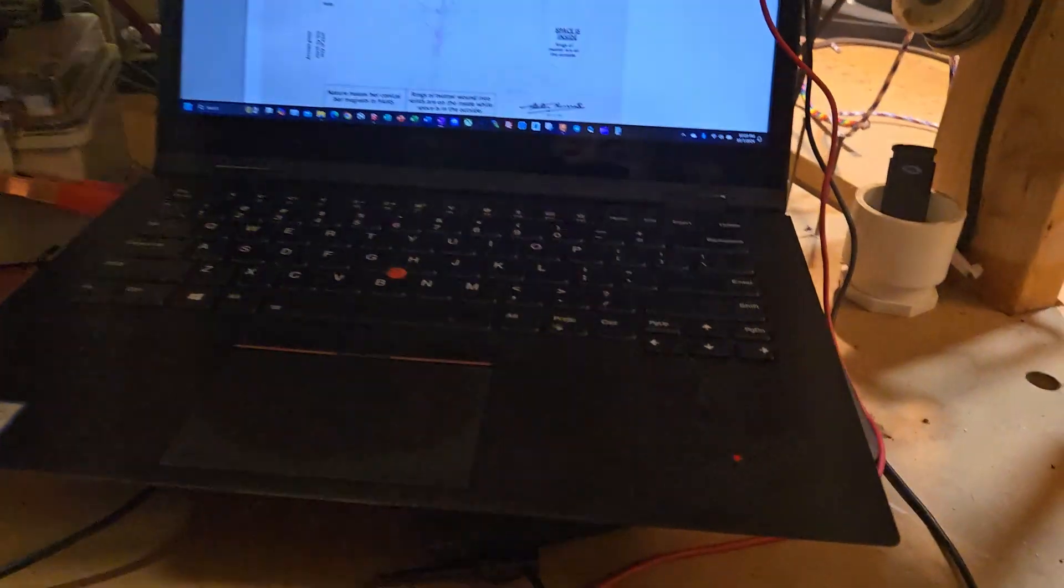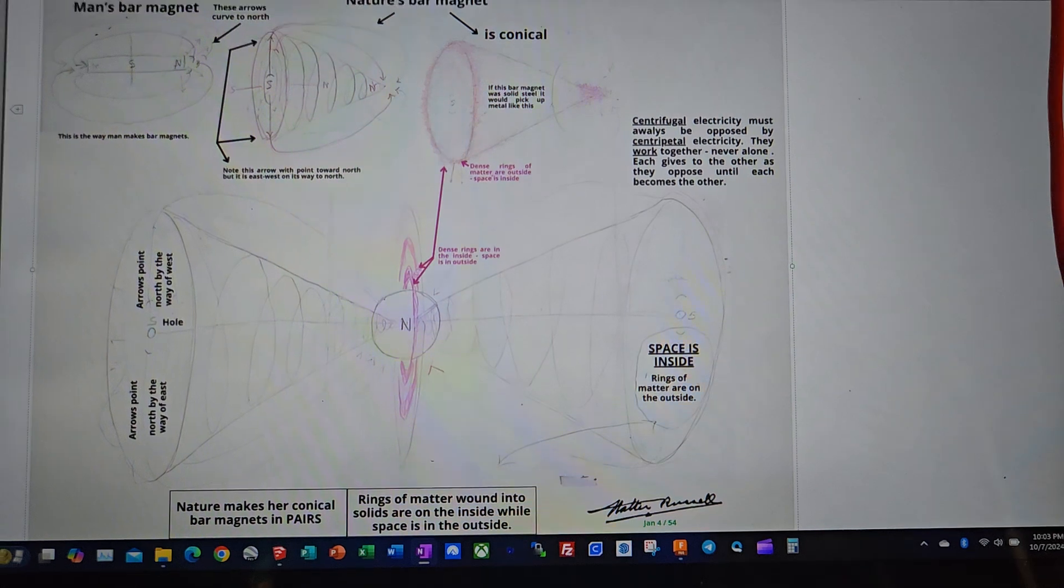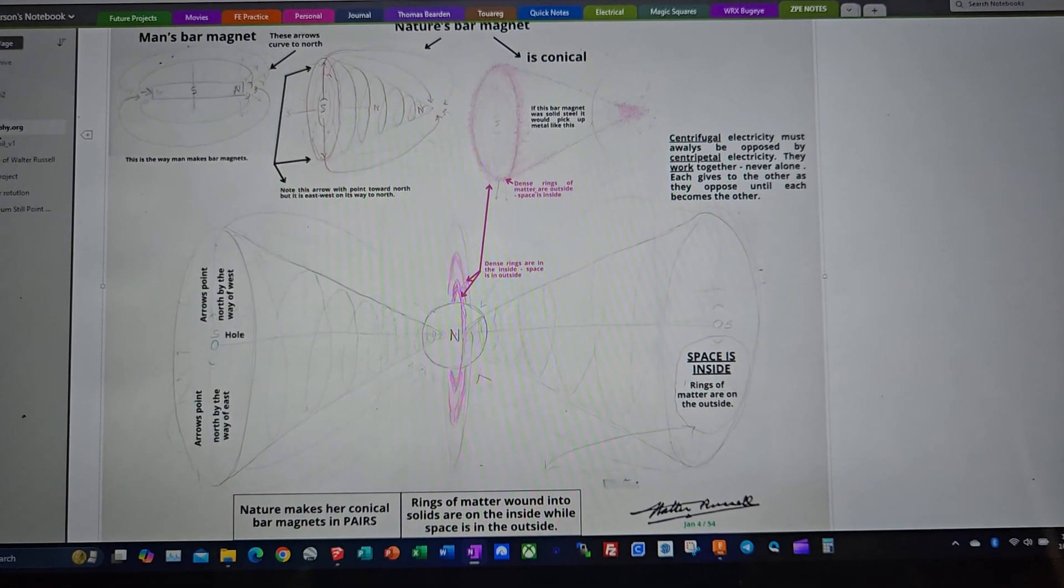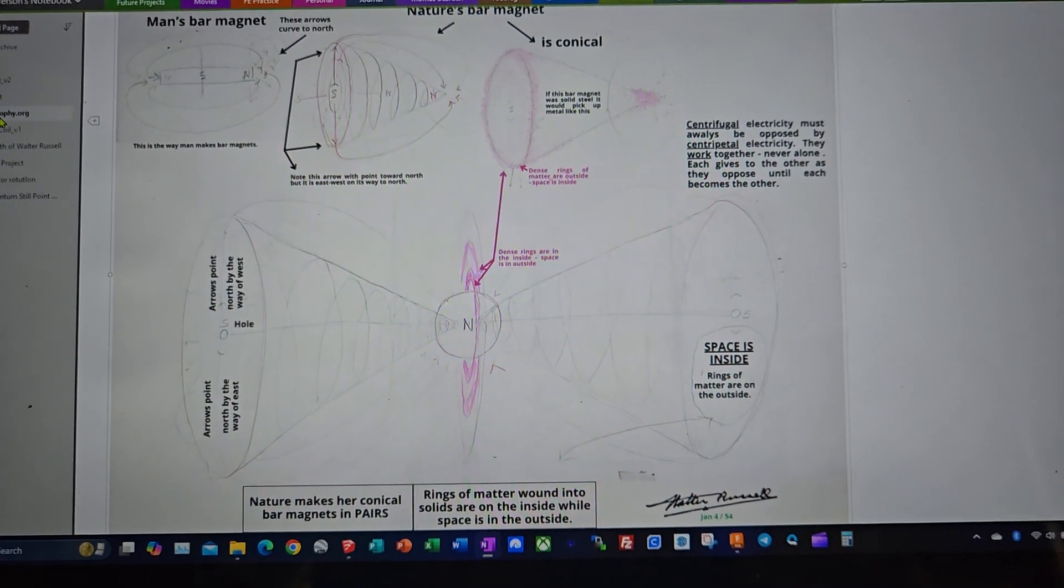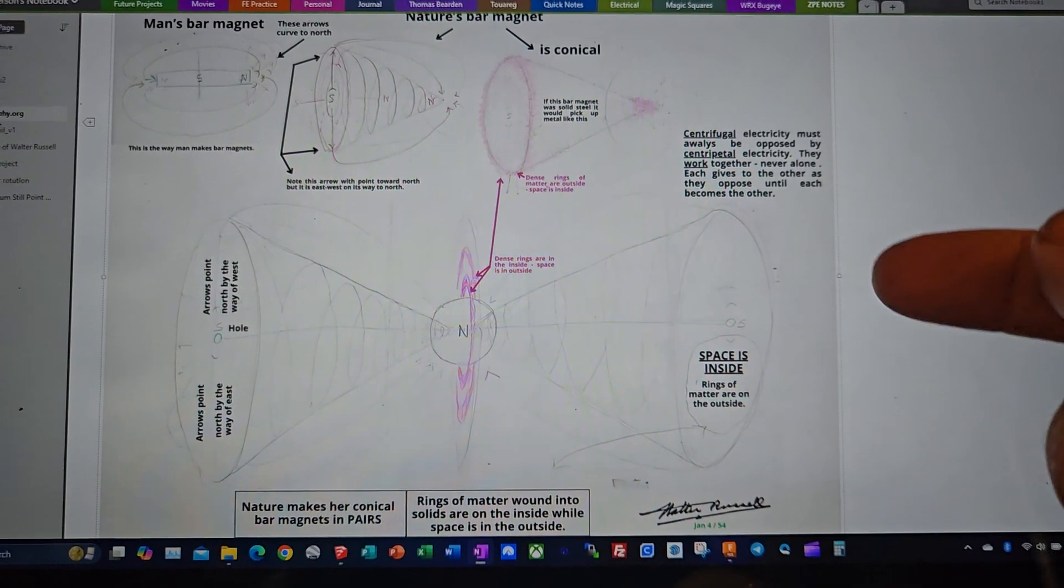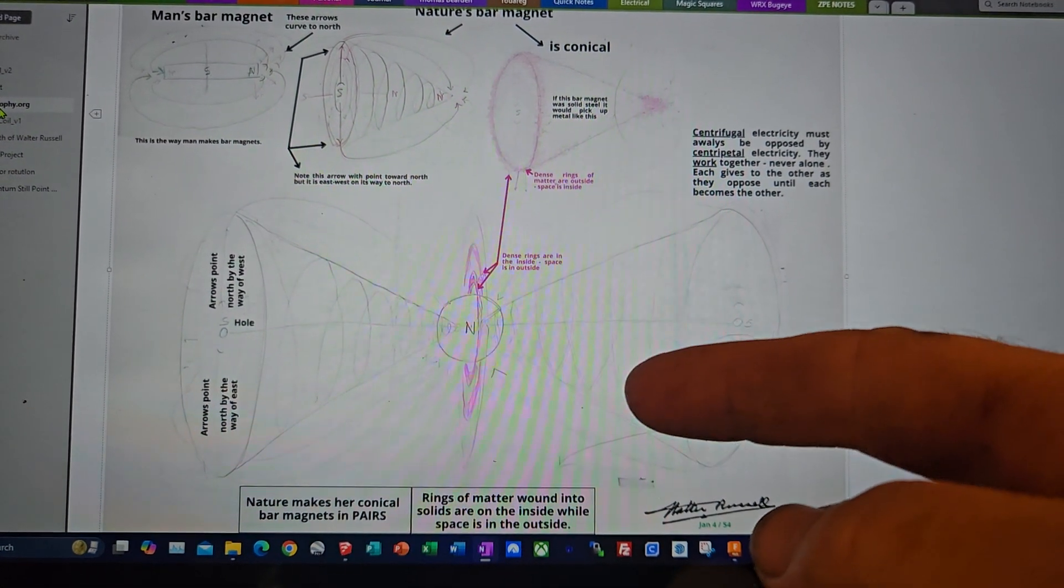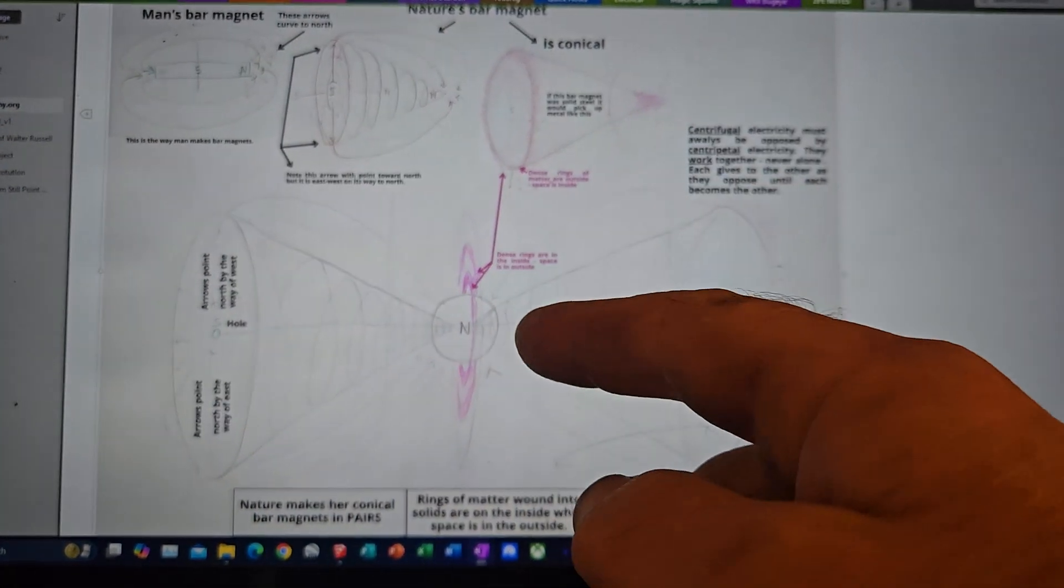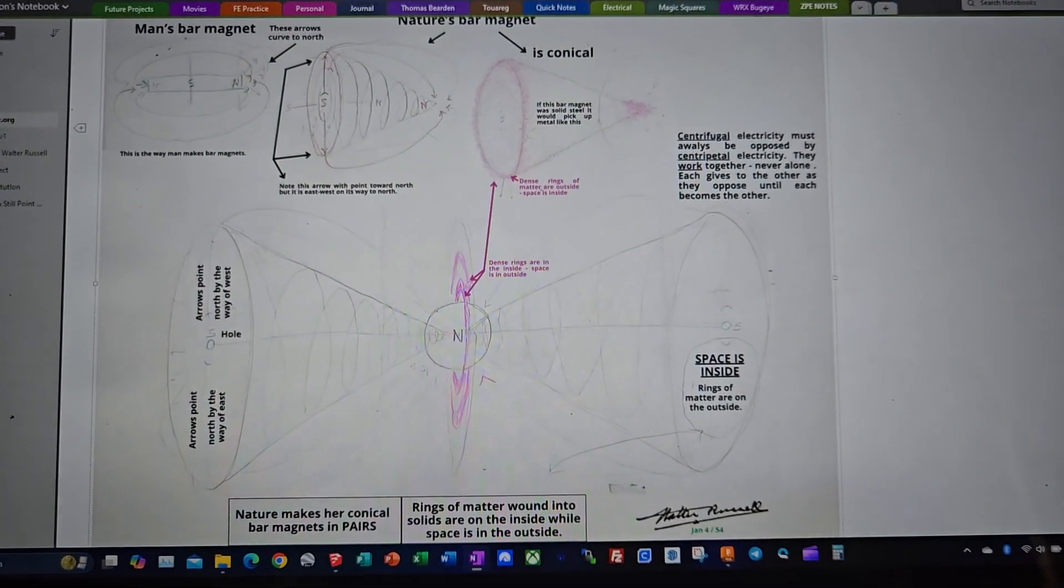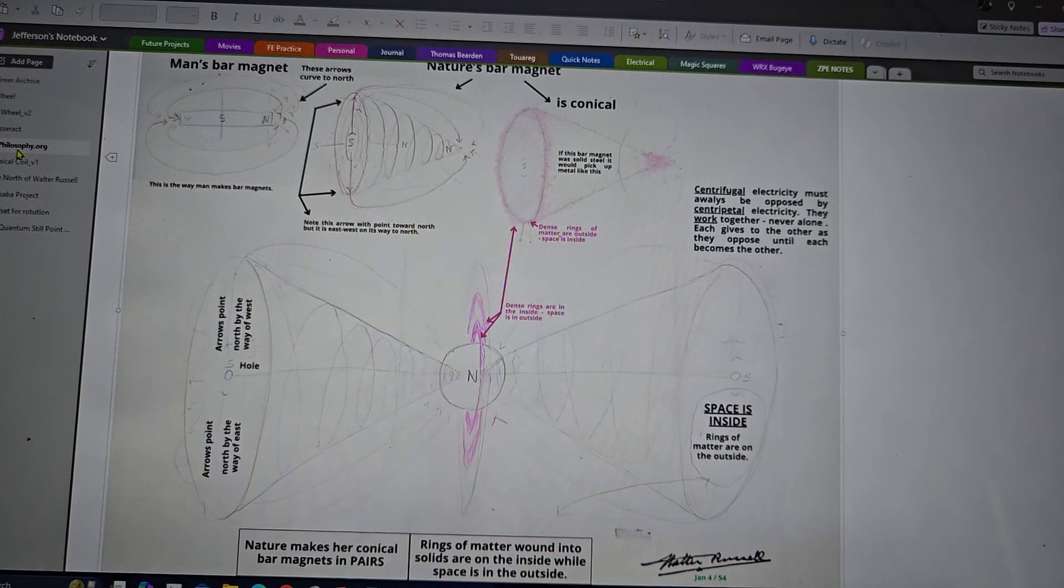So one of his principles was looking at magnets and spirals, and here's basically what we're going to show here is that as we focus these two conically wound electromagnets towards each other, they create this zero point in the middle there and they're dense rings of matter.